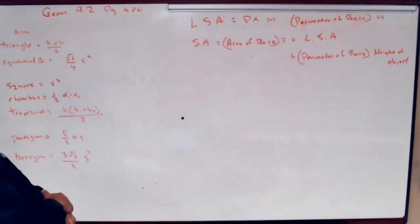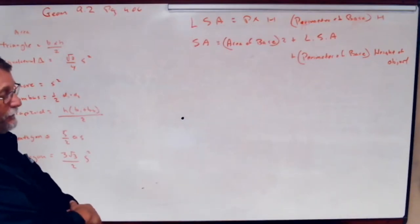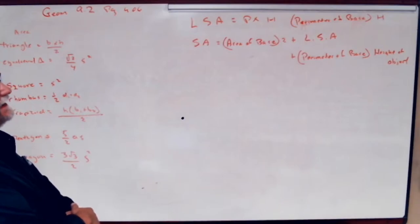We're going to be dealing with lateral surface area. Lateral surface area is perimeter times height. When we're dealing with a figure like a prism or cylinder, it's perimeter of the base times height.